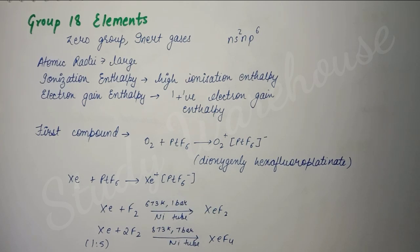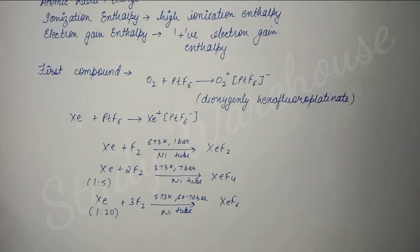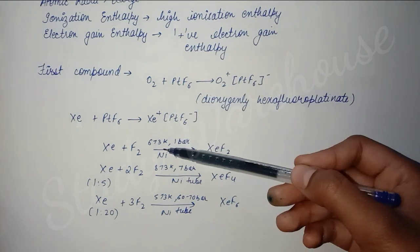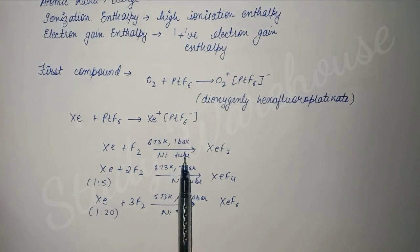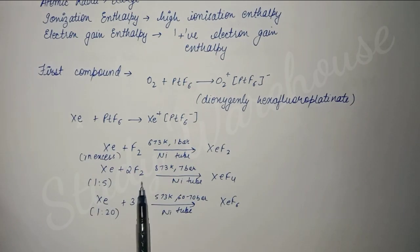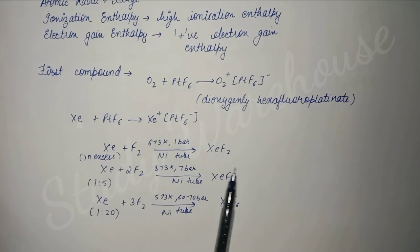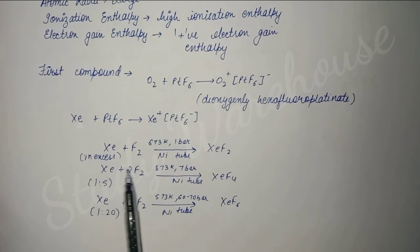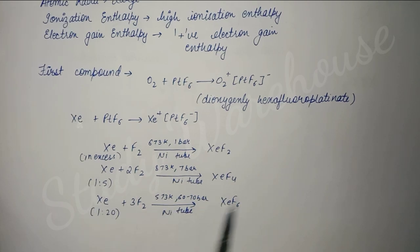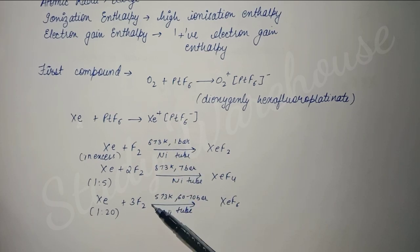Next, the reactions you need to memorize are how all xenon fluorides form. Xe plus F2, and you need to remember all the conditions: at 673 Kelvin temperature, one bar pressure, and this reaction is done in a nickel tube - XeF2 forms. Here xenon should be in excess for this reaction to occur. Then Xe plus F2 at 873 Kelvin temperature, seven bar pressure, in nickel tube obviously, then XeF4 forms. Here the ratio should be one to five between them. Here it should be one to twenty, and these should be the conditions. All these reactions you need to memorize. There's nothing to understand as such because you just have to memorize. I learned it like this: 673, then 873 because 73-73 is same, then 573. That's how I learned it, so you can do the same.